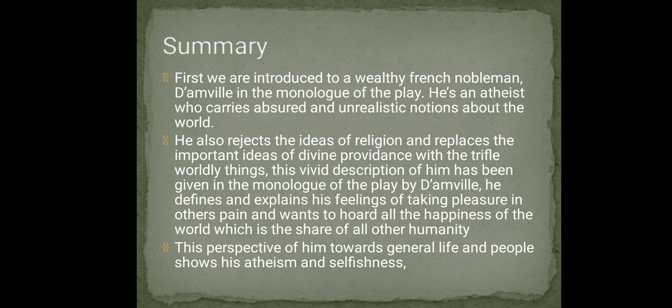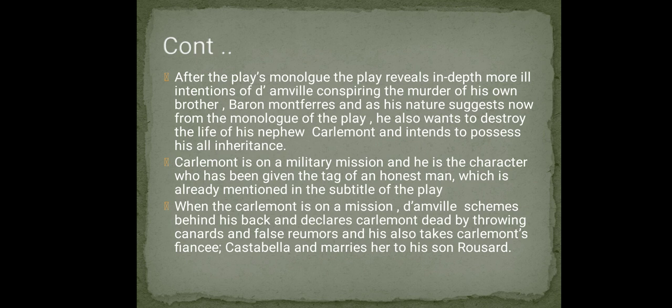What actually happens in the course of the action? D'Amville is a very selfish man involved in atheistic acts — he doesn't believe in God and takes pleasure in others' pain, wanting to hold all possible happiness for himself. In the next slide we see his other ill intentions: he conspires the murder of his nephew Charlemont, who is an honest man on a military mission. Behind his back, D'Amville does two things: first, he arranges a secret marriage of his son Roussard with Castabella, Charlemont's fiancée; second, he throws a false rumour about Charlemont's death.